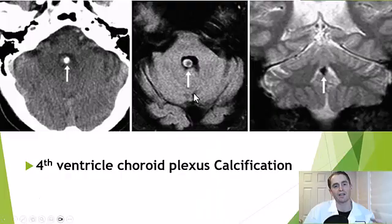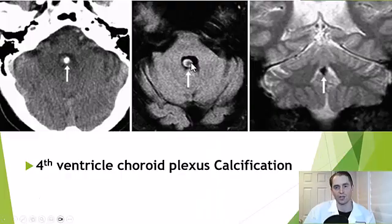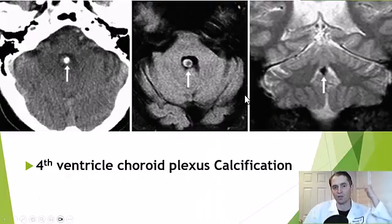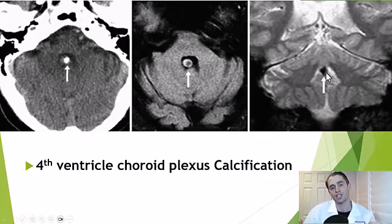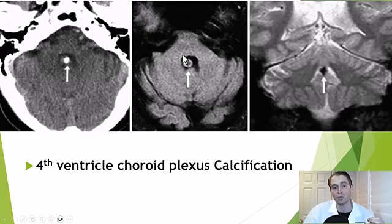You can also get them in the fourth ventricle. These are axial images down low — this is the pons and the cerebellum. Here you can see a CAT scan, and the right two images are MRI scans showing calcifications of the choroid plexus of the fourth ventricle, which is this fluid-filled space.